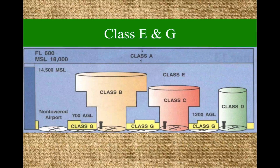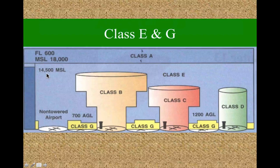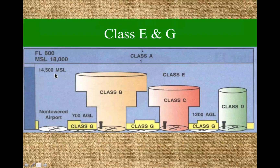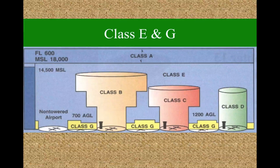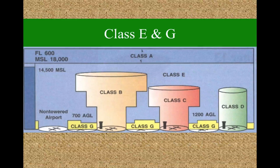But there are places where Class G can go up quite high, and that's what this drawing is trying to show us. Class G can top out at 14,500 MSL. Where does it do that? Typically you would find areas where G goes upward above 1,200 feet over mountainous areas like the Rockies or Sierra Nevadas, and they'll depict that on the chart as to how high it goes.